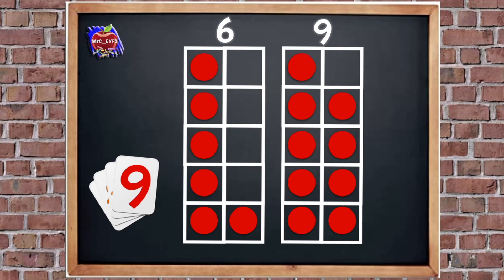So which group has more? Excellent. We can see that nine is more. So what does that mean the group of six is? What word can we use? Excellent. The group of six has fewer. Good job.